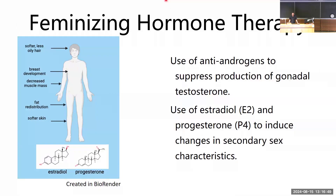Safe and accessible gender-affirming hormone therapy is an important part of working toward equity in healthcare for transgender people and ensuring safe social and medical transitions. Gender-affirming hormone therapy is the use of sex hormones, sometimes in combination with anti-androgens, with the aim of increasing the congruence between one's gender identity and physical body. This project currently focuses on feminizing hormone therapy — the use of estradiol and progesterone to achieve feminizing changes in secondary sex characteristics, including smoother skin, hair, breast growth, and changes in muscle mass and body fat distribution.